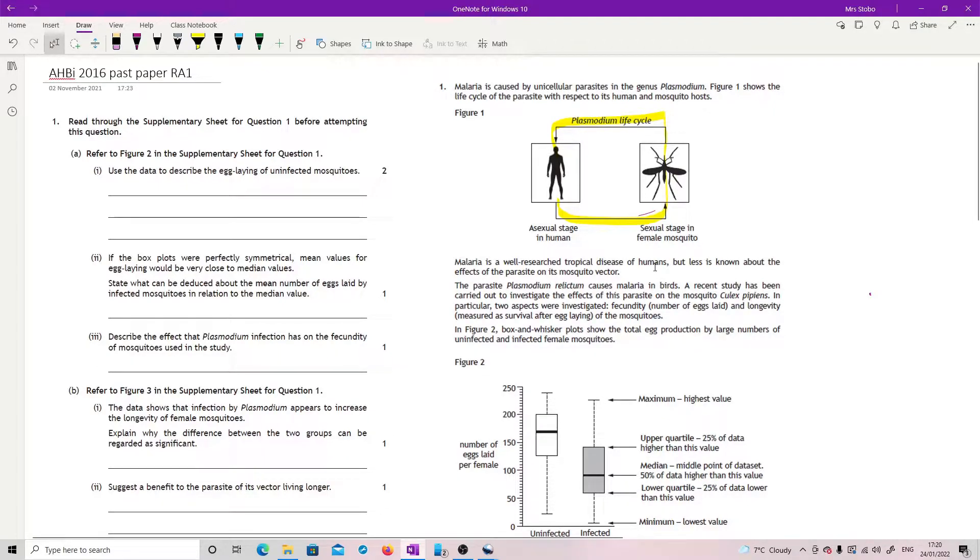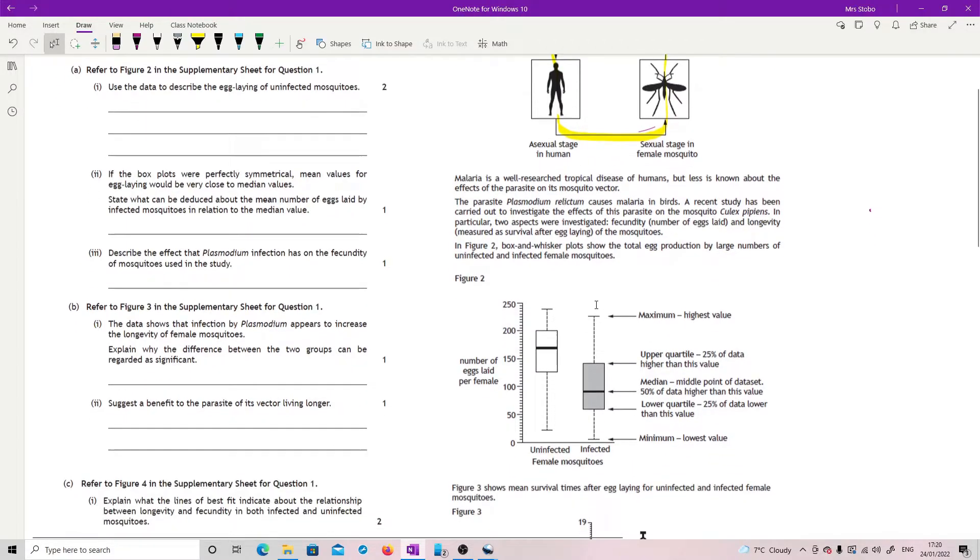It tells you it's a well-researched tropical disease of humans but less is known about the effects of the parasite on its mosquito vector. The parasite, there's another Plasmodium but this is relictum, causes malaria in birds.